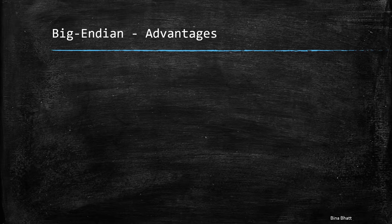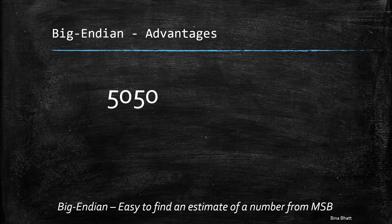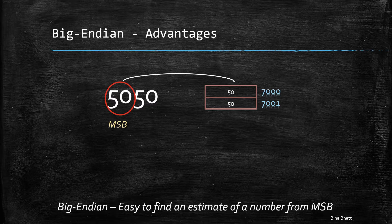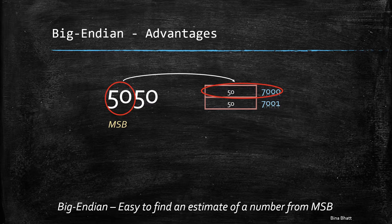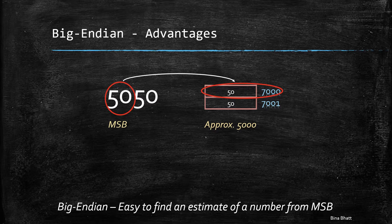Also, the moment you access the MSB first, you get a rough estimate of the number. For example, if the number is 5050, the MSB makes it clear that the number is approximately 5000.